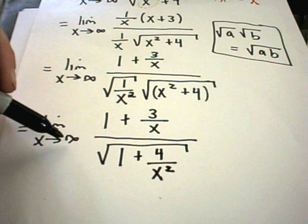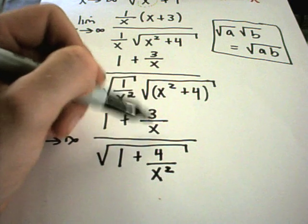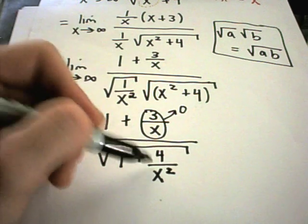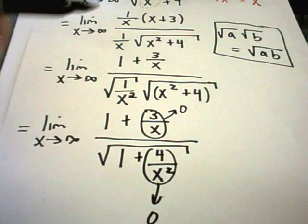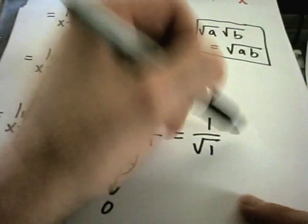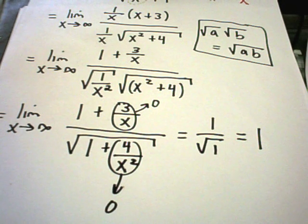And now I can evaluate my limit. Just like in the other examples, as x goes to infinity, 3 divided by x, well, I'll have 3 divided by a big number. This term's going to go to 0. Same thing with the 4 over x squared. It's going to go to 0. And I'm left with 1 over square root of 1, which is just positive 1. And that would be your answer in this case.